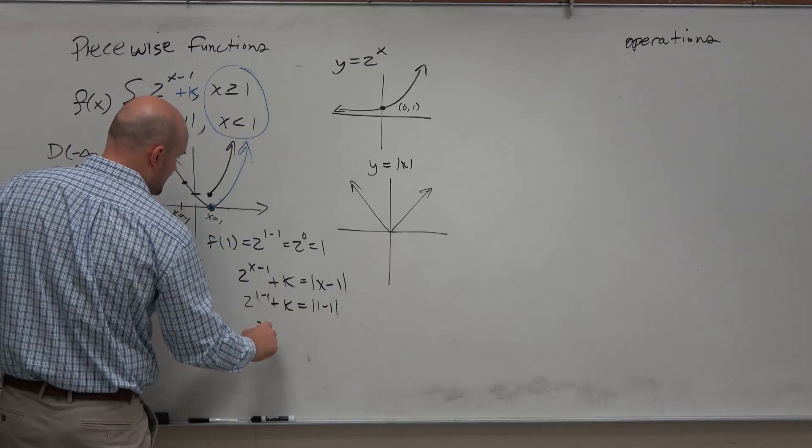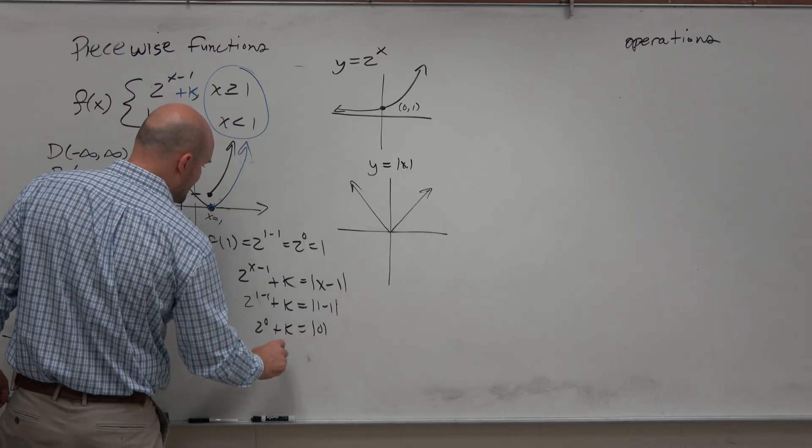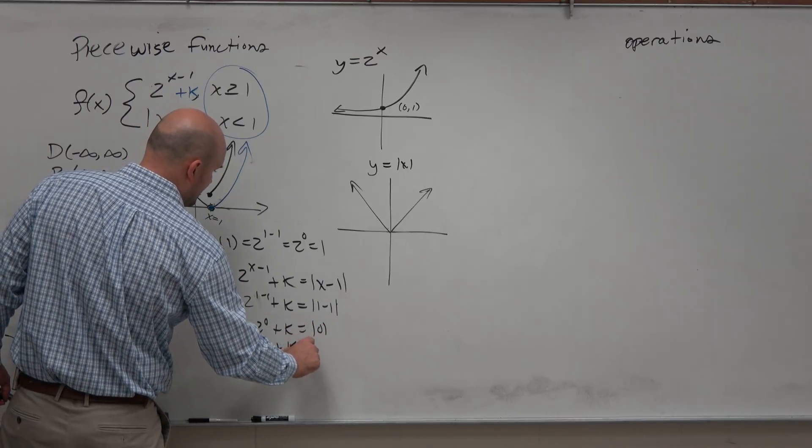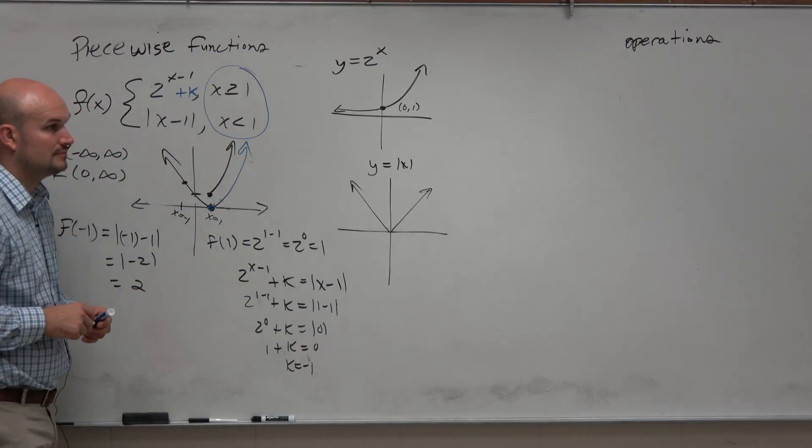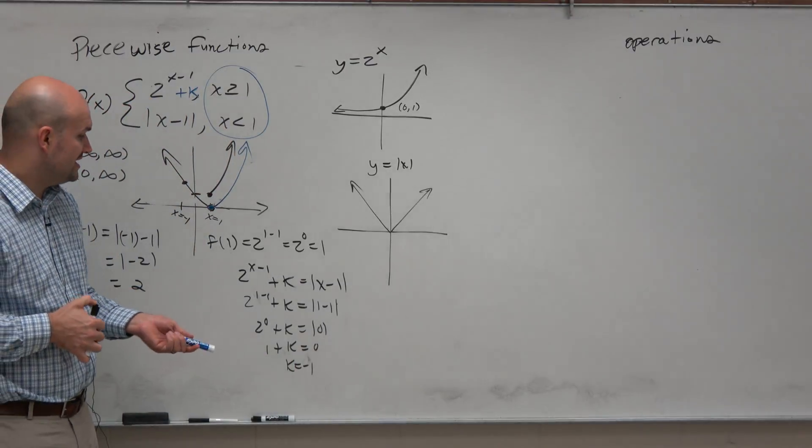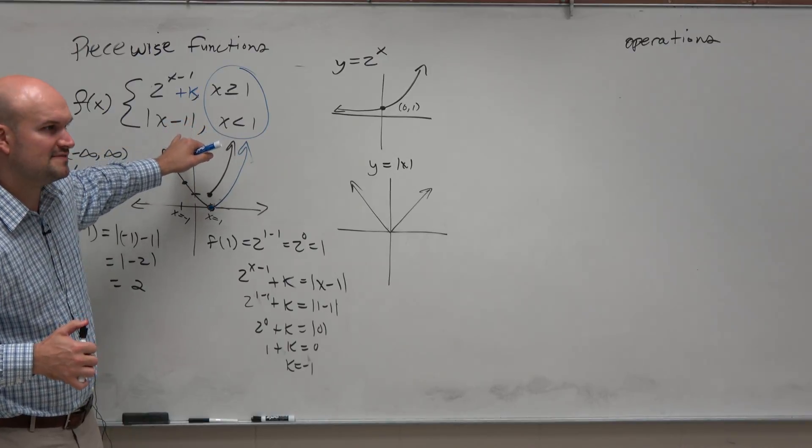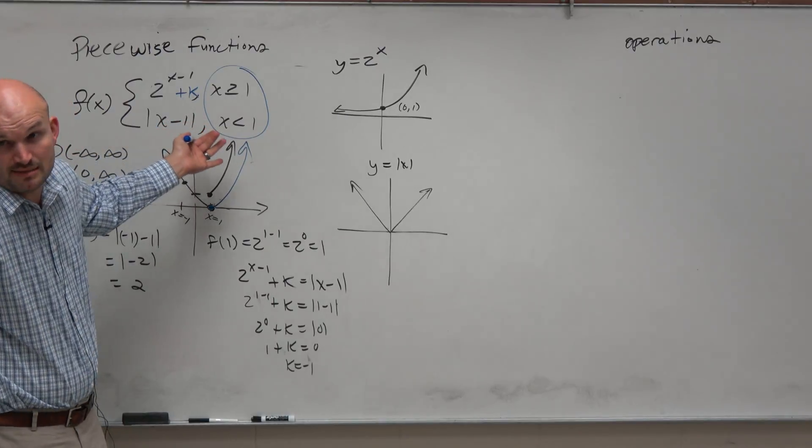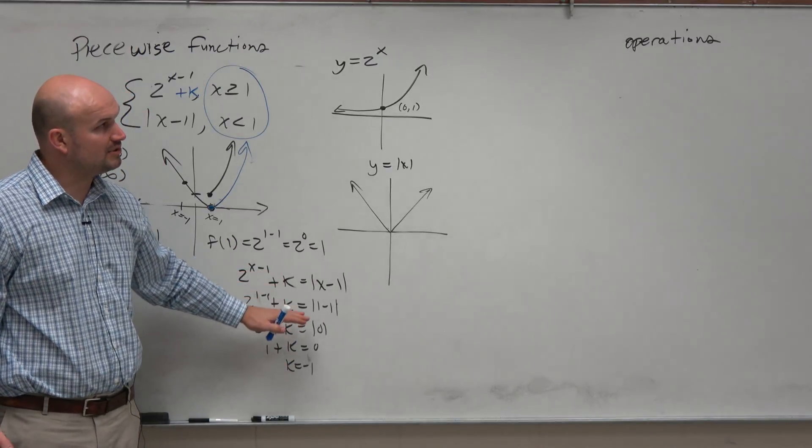So therefore, 1 minus 1 is 2 to the 0 plus k equals absolute value of 0, 1 plus k equals 0, k equals negative 1. So now you guys can see that visually, we already knew the answer, right? But not all the time are you going to have something that's visually easy to do. Sometimes you may do it that way. So we need to make sure we can understand this algebraic approach as well.